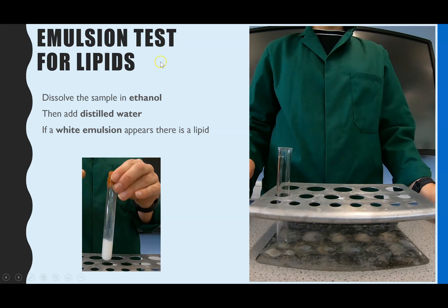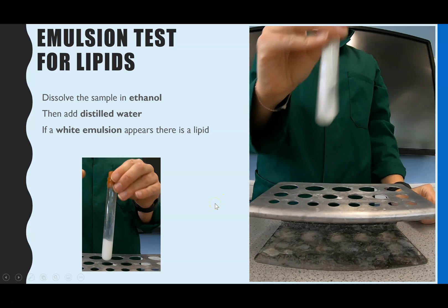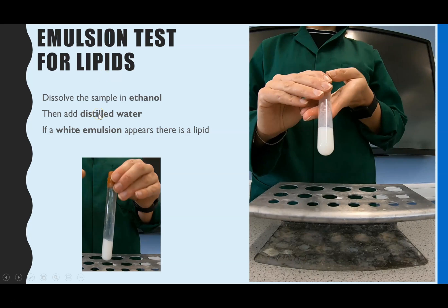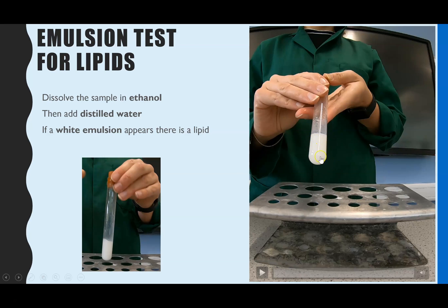Let's look at the test for lipids, known as the emulsion test. You need to dissolve your sample in ethanol — adding some oil, then adding ethanol and shaking it to dissolve. Next, you add distilled water and shake again. Finally, a positive result is white in colour, and we describe it as an emulsion. It's really important to use that word, not 'precipitate.' Precipitate means you've made a solid, and we haven't. Emulsion means the lipids have been split into such tiny droplets that they're surrounded by water, giving a thick liquid consistency — but it is not solid. So white emulsion is the positive result.